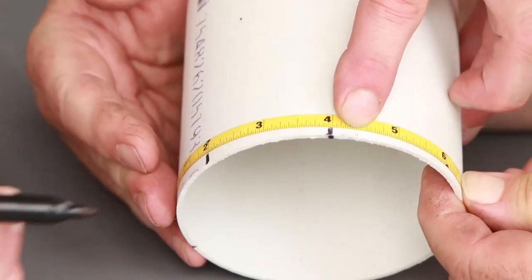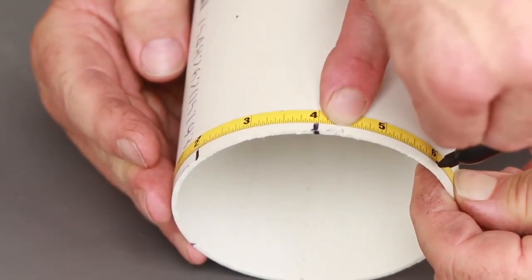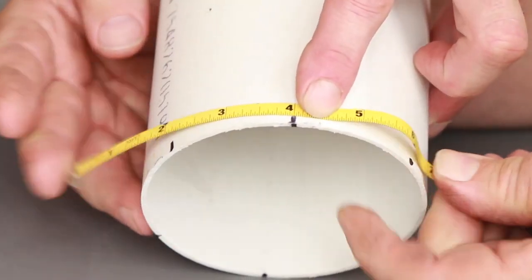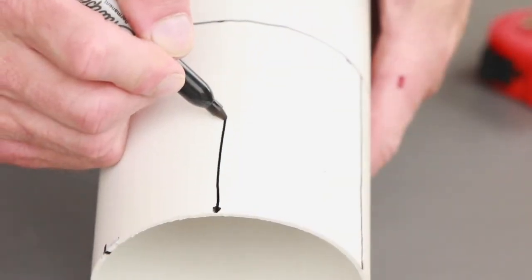Measure 2 inches on either side of the initial marks and draw a line from the bottom of the pipe up to the 4 inch marker.